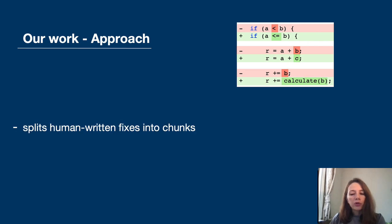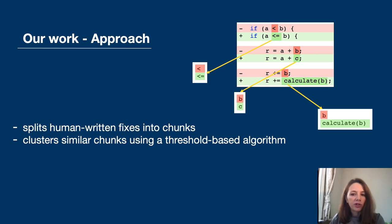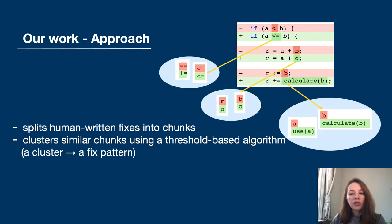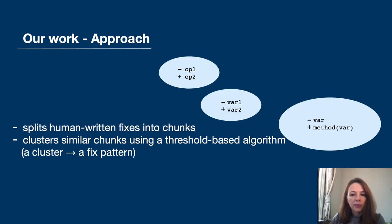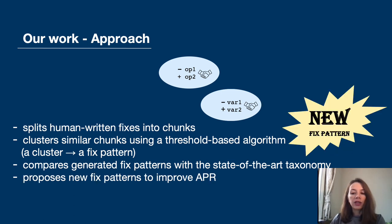Our automated approach splits human-written fixes into smaller chunks, clusters similar chunks using a threshold-based algorithm, and each cluster represents a fixed pattern. It also compares generated fixed patterns with the state-of-the-art taxonomy of fixed patterns, even though their representation is different. We got some matching patterns, which validates our approach, and also some that didn't match the state-of-the-art taxonomy — they represent new fixed patterns.